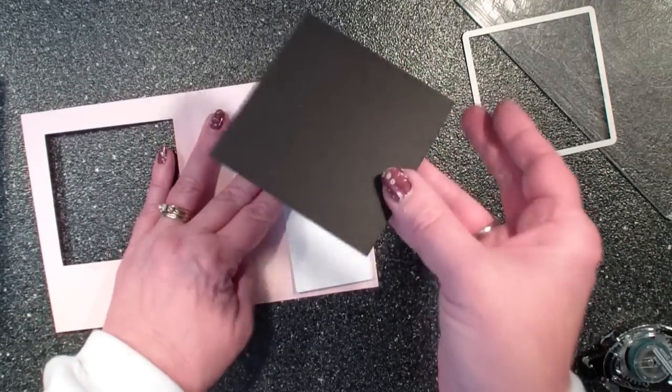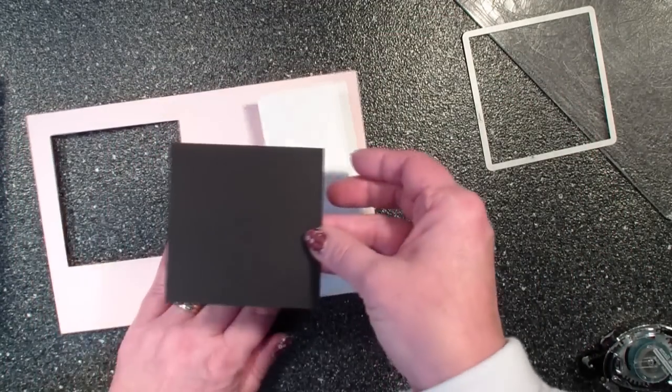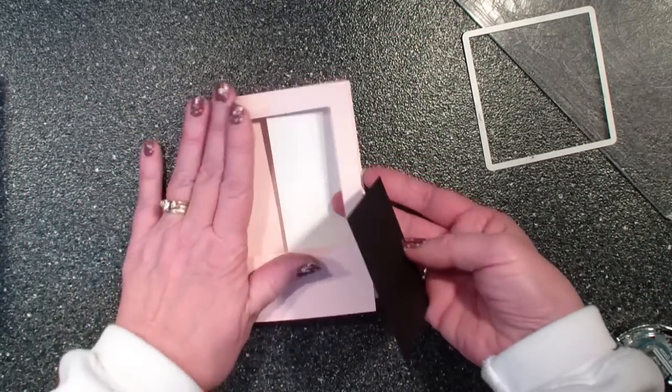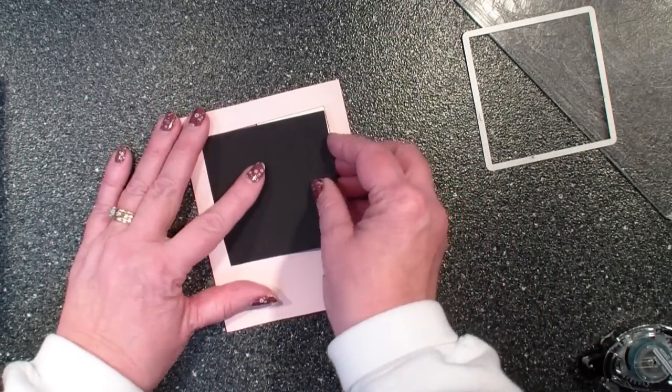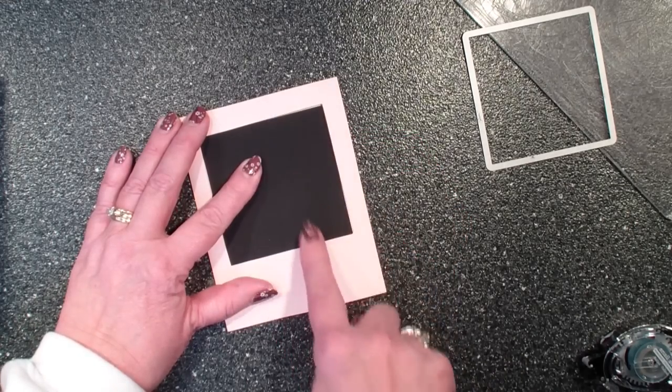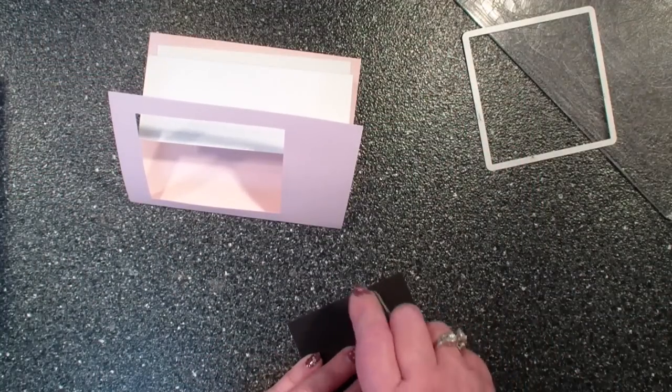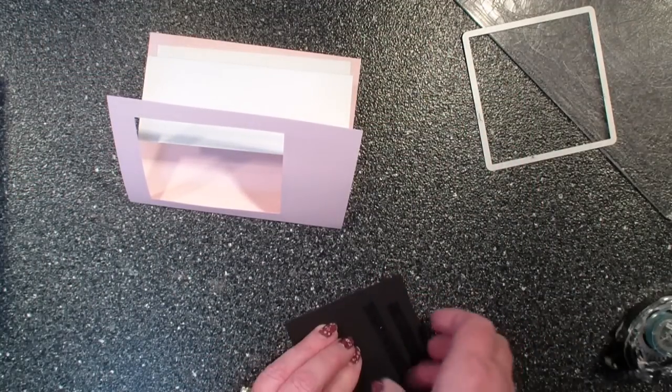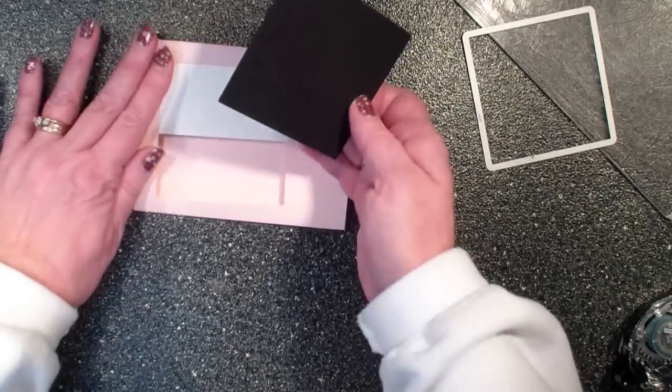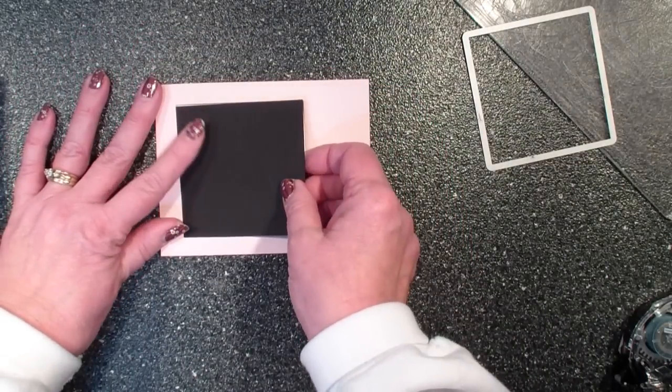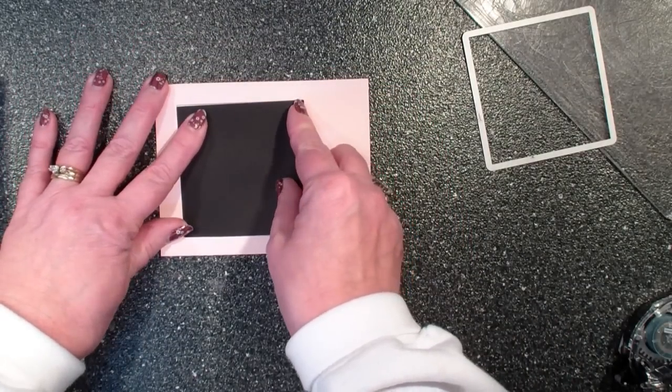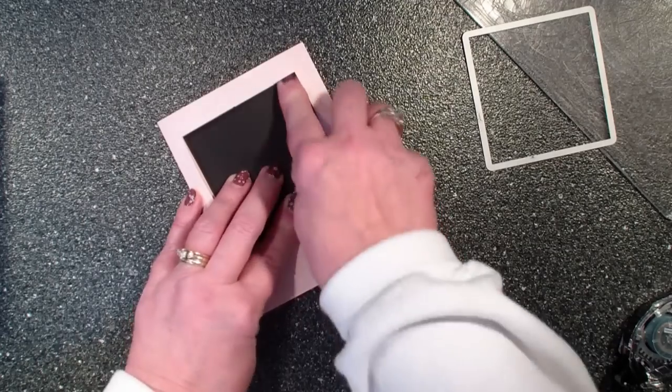Next what I'm going to do is take that square remember that I cut out of my black and I want it to go right in the opening and so I just want adhesive on half of the side over here. Again using sticky strip or fast fuse will give you a stronger bond but I've just placed that right in the opening.